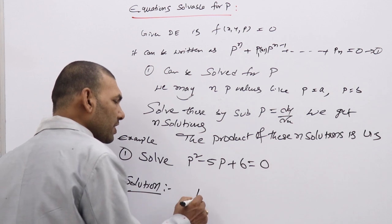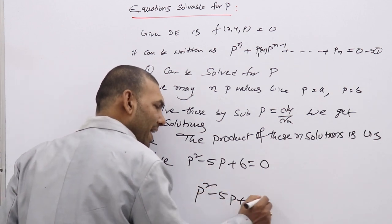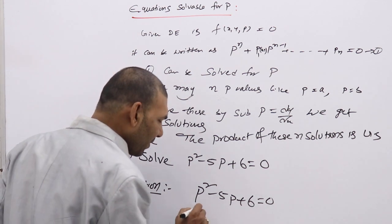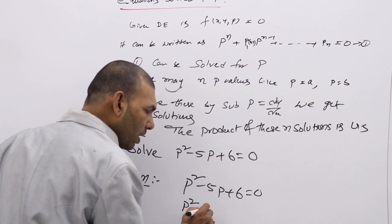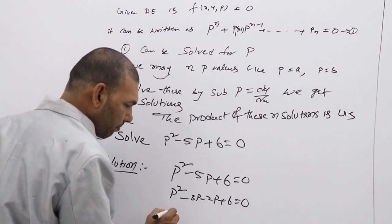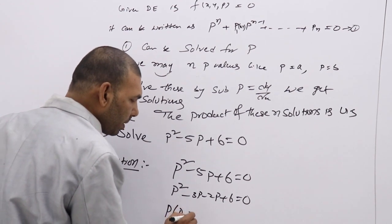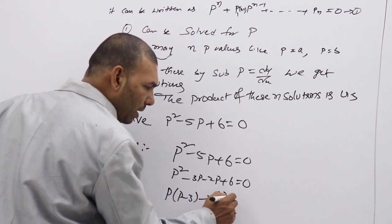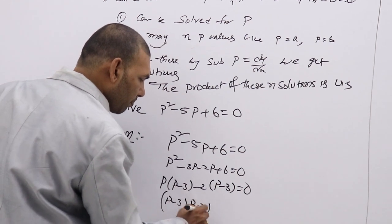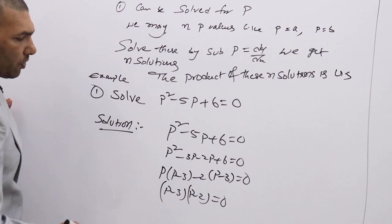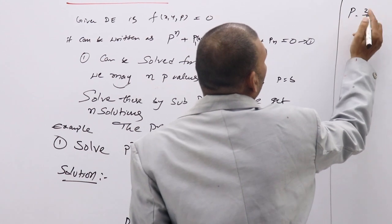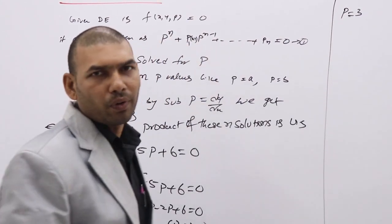Now solve this equation using factorization. P² - 5P + 6 = P² - 3P - 2P + 6. Taking P common: P(P - 3), and taking -2 common: -2(P - 3). So (P - 3)(P - 2) = 0, giving P = 3 and P = 2.